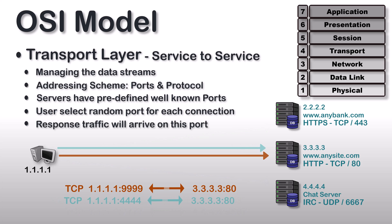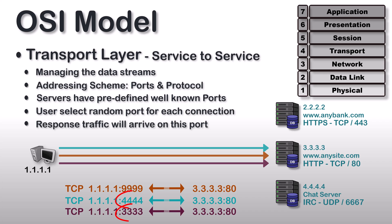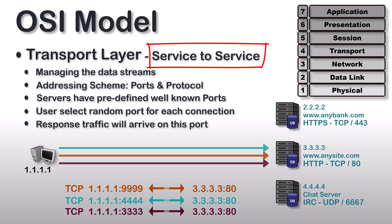This process also allows the user to make multiple connections to the same server by simply using different port numbers. For example, when you are browsing the internet or watching this video, you not only open one tab — you may have opened multiple tabs to the same website. The reason each of these browser tabs doesn't accidentally display data from another tab is that each time you open a new tab, your web browser generates a new random source port number. That's why the data streams are isolated from one another. This is a function of TCP or UDP, which are both layer 4 protocols, and again layer 4's goal is service to service delivery of data.